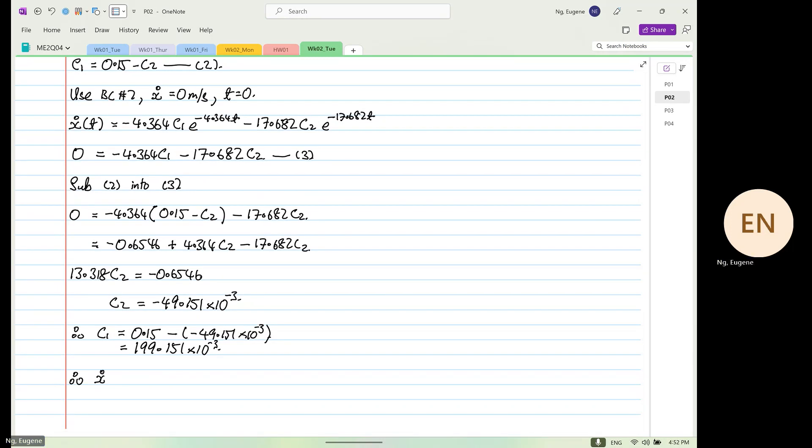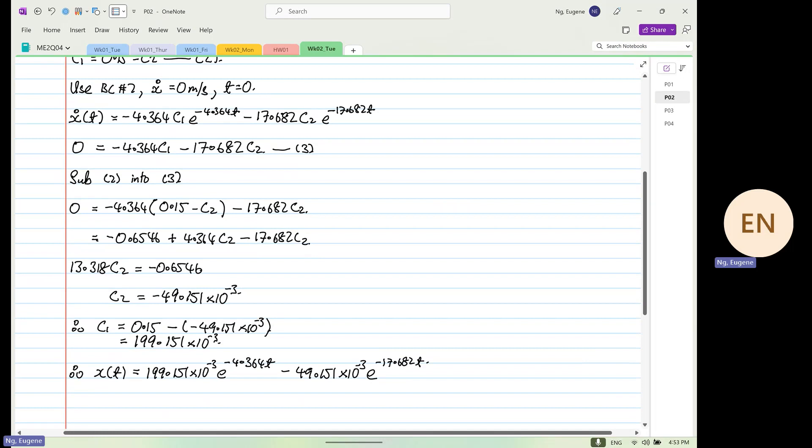So therefore your final solution will be x as a function of time equals 199.151 times 10 to the power minus 3 exponential of minus 4.364t minus 49.151 times 10 to the power minus 3 exponential of minus 17.682t. So this is our final answer.